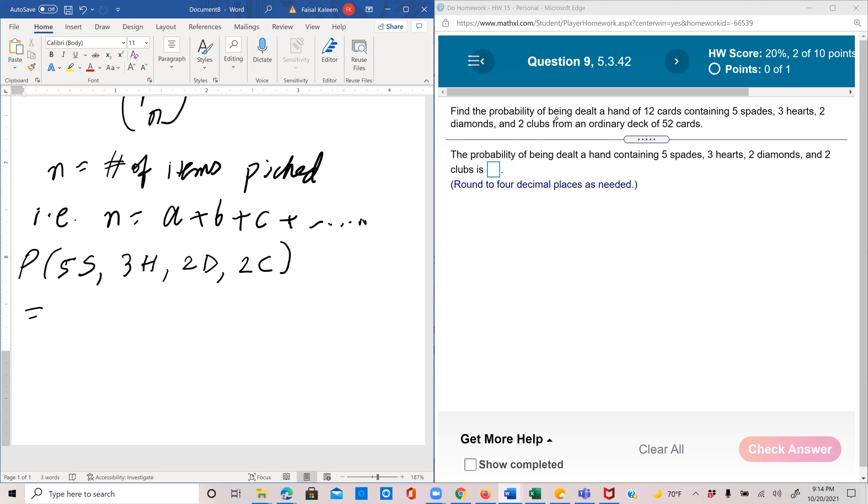So there are 13 combination 5 ways to pick the five spades out of the 13. Similarly, there are 13 combination 3 ways to pick three hearts out of the 13, 13 combination 2 to pick two diamonds out of the 13, and 13 combination 2 to pick two clubs out of the 13 clubs.